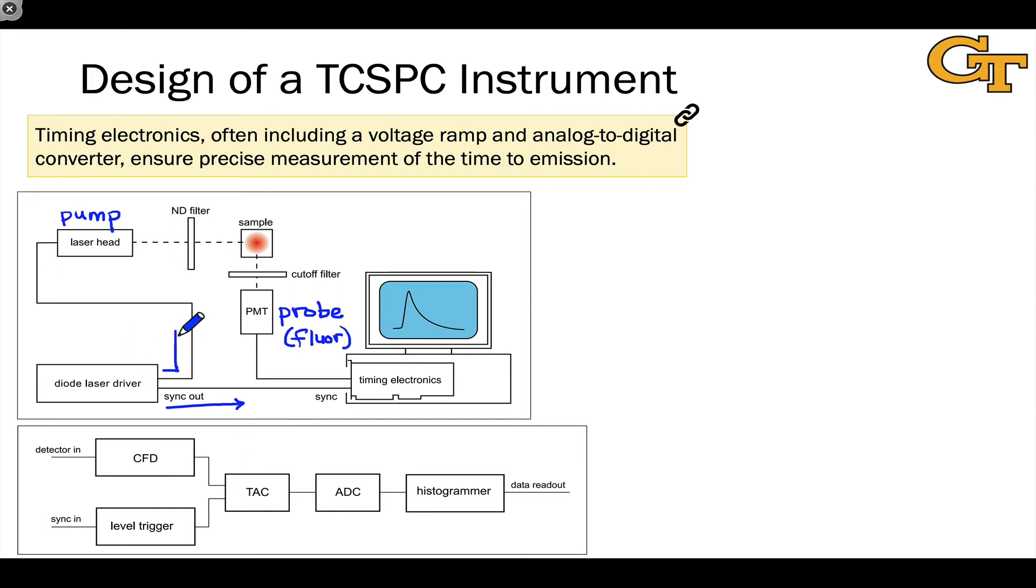At that point, the computer begins timing. And this is often a voltage ramp. So it will start at zero volts and slowly move up, slowly increase the voltage with time in some way that is known to us, typically in a linear way. And at some point in the future, a photon is emitted by the sample. That photon passes through a cutoff filter.